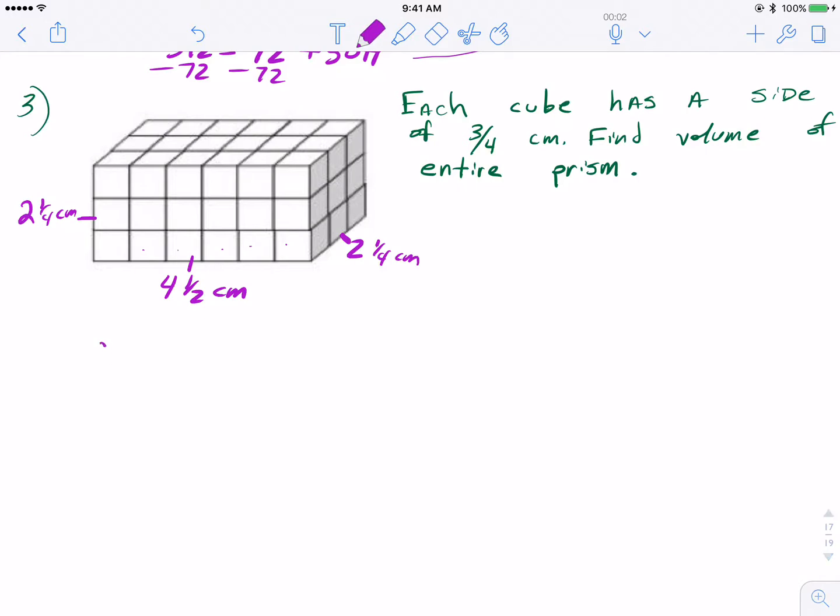And now that I have the dimensions, I can just apply my volume formula of length times width times height. I'm going to write the fractions as mixed numbers, so that's going to be 9 fourths times our width is 9 over 2 times our height is also 9 fourths. Unfortunately for us, nothing cancels nicely here. 9 to the third power, or 9 times 9 times 9 is going to be 81 times 9, or 729 over 4 times 2 is 8 times another 4, 32.